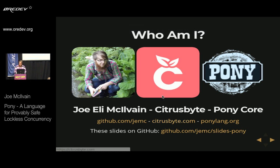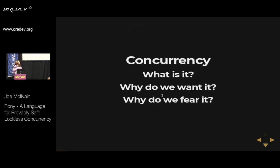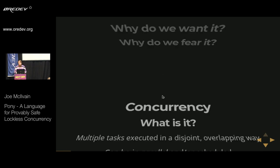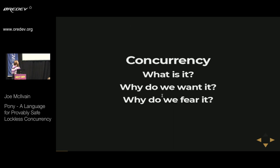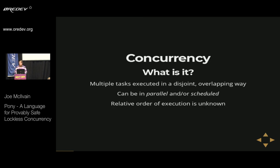So let's start off by talking a little bit about concurrency. What is it? Why do we want it? And why do we fear it? Concurrency is having multiple tasks that are being executed in a disjoint overlapping way. These tasks can be executed in parallel on multiple processors, or they could be scheduled in arbitrary slices of time on one or more processors. When we're talking about concurrency, we just mean that we're not sure when each task is running relative to any other — they could be running in parallel or in some unknown possibly interleaved sequence.